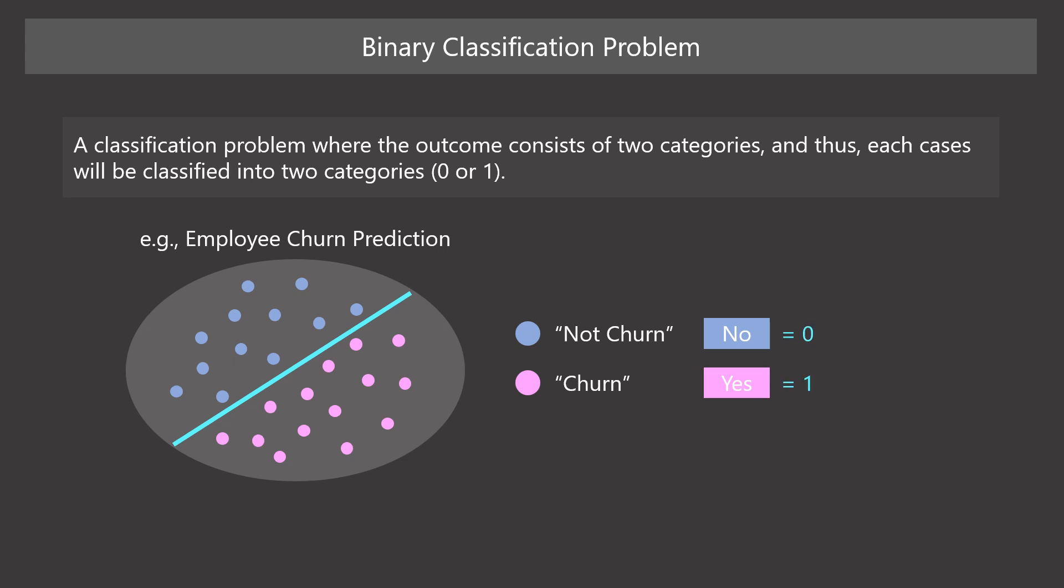Many binary classification problems can be regarded as a yes or no problem. In a binary classification problem, we assign value to each category of the outcome variable to convert it to numbers so that we can apply machine learning algorithms. Usually, we assign yes cases to 1 and no cases to 0. So in a binary classification problem, the outcome variable takes two values, 0 or 1.